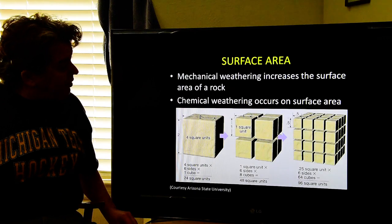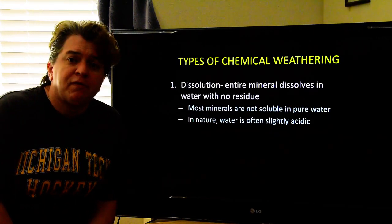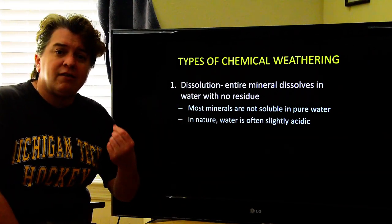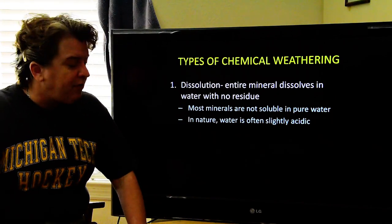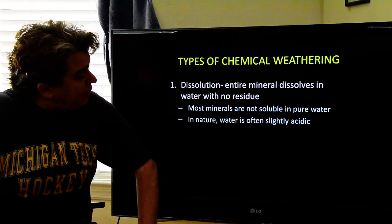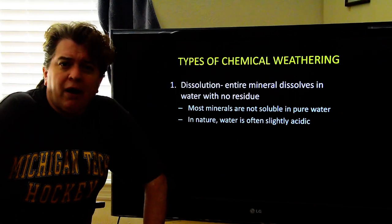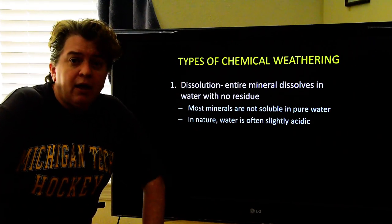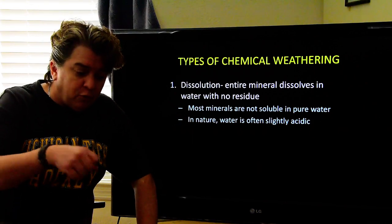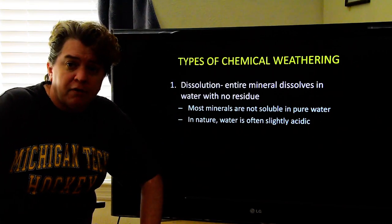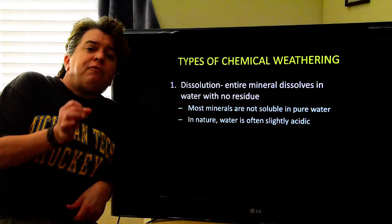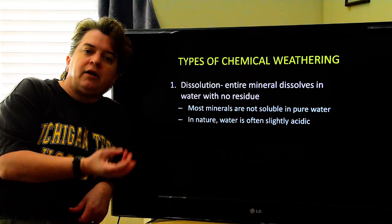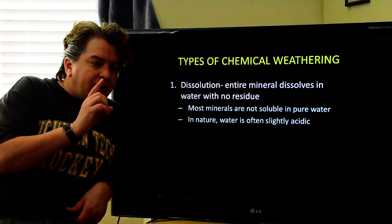Let's look at what happens in chemical weathering — there are a few different types. One type is called dissolution, where the entire mineral dissolves in water and there is no residue left behind. You already know about this — take a mineral called halite, which you know as rock salt. If you pour some salt in water and stir it up, the salt looks like it disappears. That's dissolution. Very few rocks will dissolve completely in water like halite does.